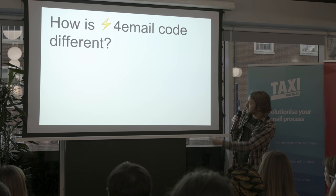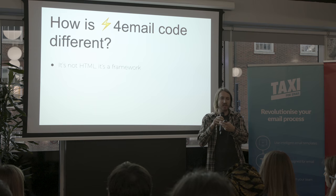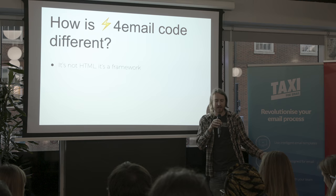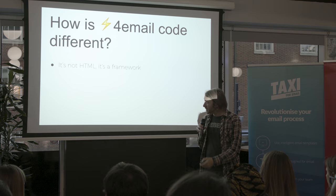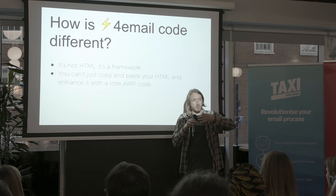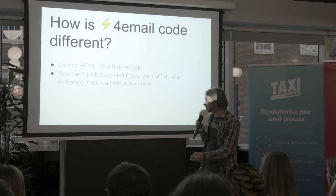So how is the code different? It's not HTML — it's a framework. If anybody uses something like MJML, you're used to writing code that looks like HTML but has elements that aren't HTML, and you run it through a script that exports it as HTML. It's the same sort of concept, except you send it before exporting to HTML — Gmail will run the script to export it. So you can't just copy and paste your HTML. You can't just put a little AMP component in amongst the rest of your code. You do need to build this from scratch.